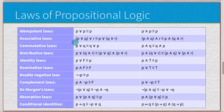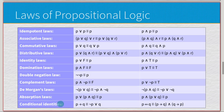If you're curious how we knew how to do those specific transformations, there's a bunch of laws: double negation, complement, DeMorgan's, absorption, conditional identities, and others including identity, domination, commutative, associative, and distributive laws. This is just a curated list — there are more.